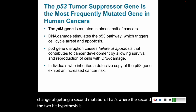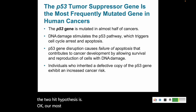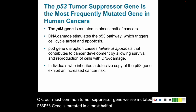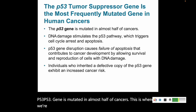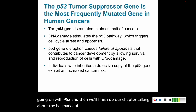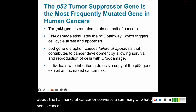Our most common tumor suppressor gene we see mutated is p53, which is mutated in almost half of all cancers. In our next video we'll discuss what is going on with p53, and then we'll finish up our chapter talking about the hallmarks of cancer — a summary of what we see in cancer cells. See you soon, and let me know if you have any questions.